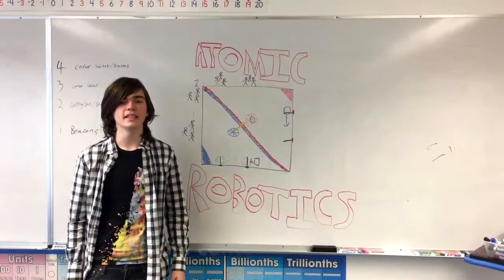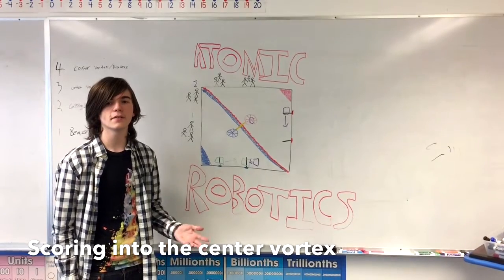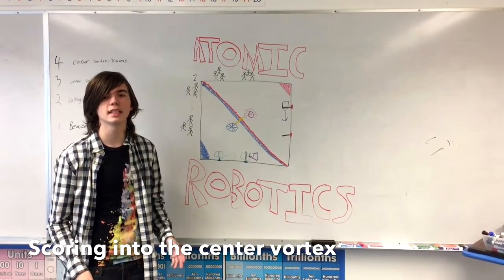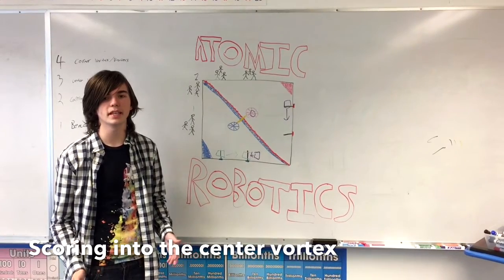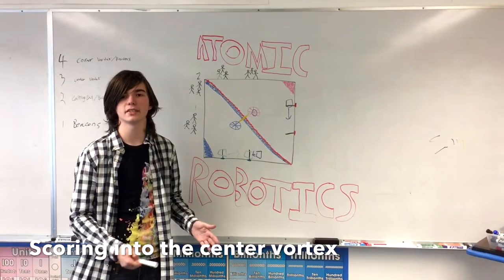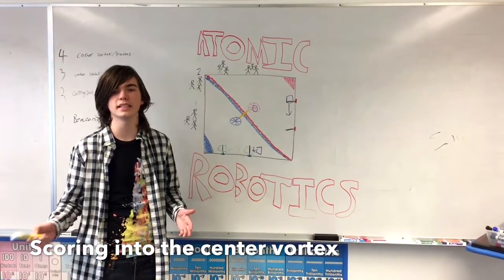The third strategy is primarily revolving around scoring particles into the center vortex. You start with three in autonomous, and if you score any beacons in autonomous, then you get an additional one for each beacon of your color - a maximum of two extras, so it doesn't count if the other team scores the beacons into your color as well.